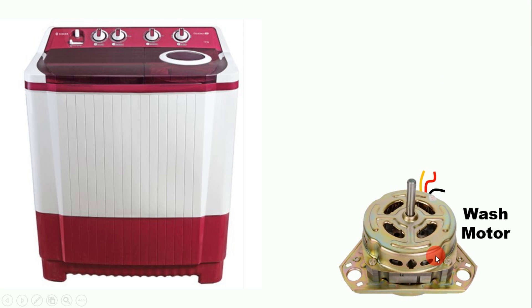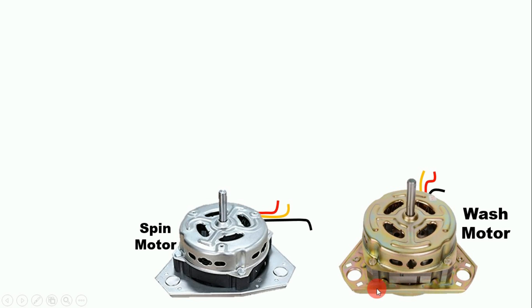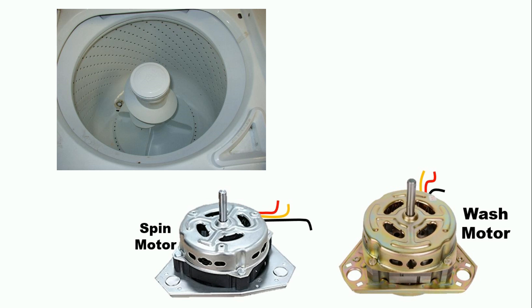The first electrical component is the motor. Inside this washing machine, two motors are used — the wash motor and the spin motor. The wash motor is for washing clothes, while drying of clothes is done through the spin motor, which rotates the drum used for drying.